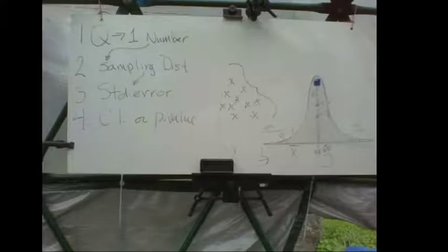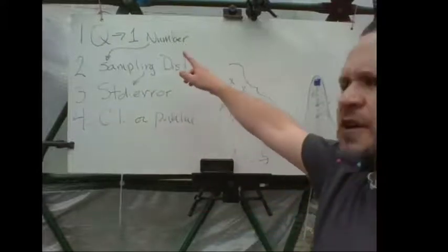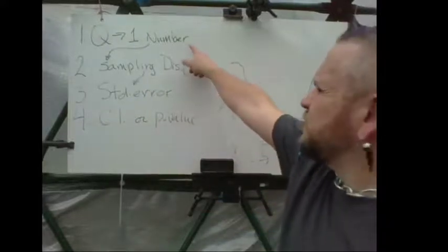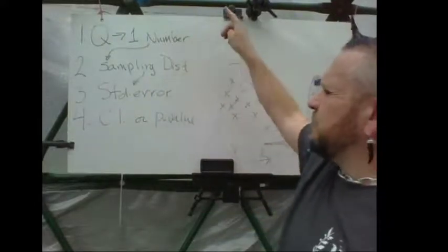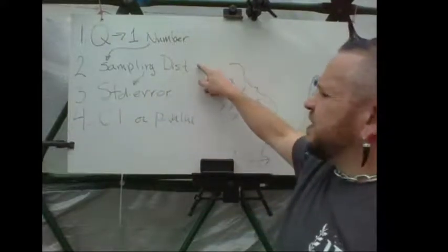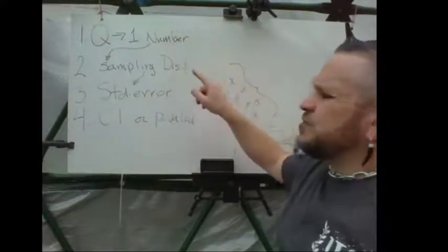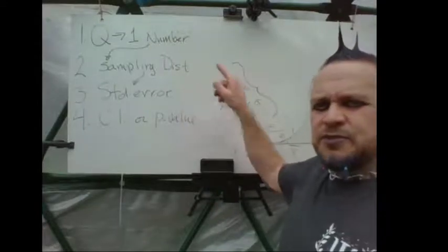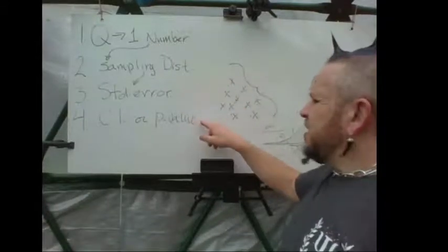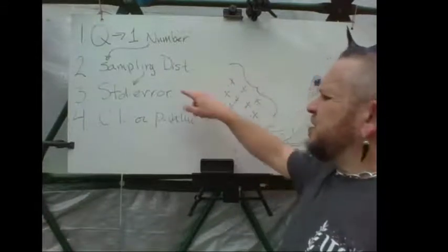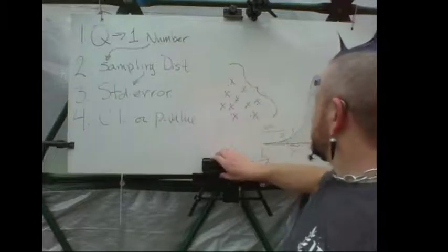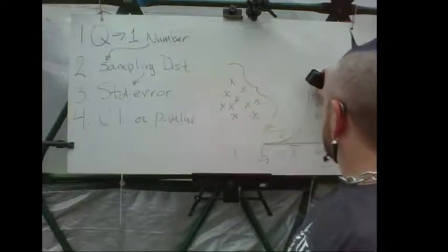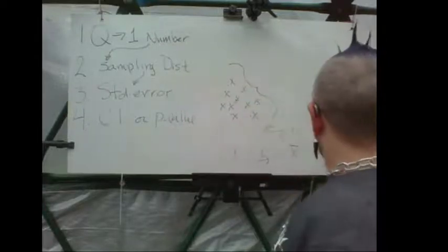But you followed this process all along: took the question, boiled it down to one number, specified the sampling distribution and its standard error, then used that information to construct a confidence interval or a p-value.